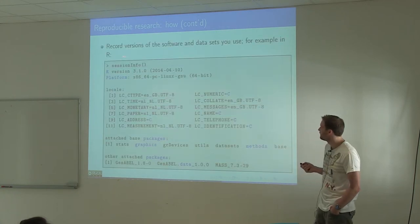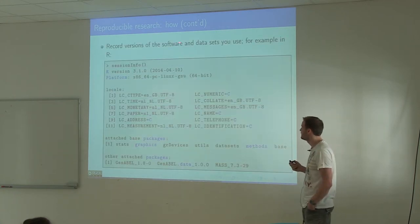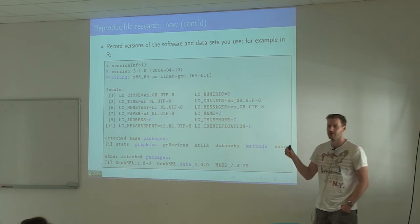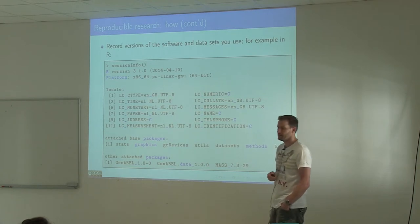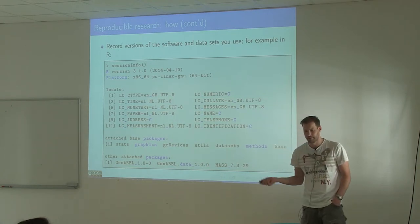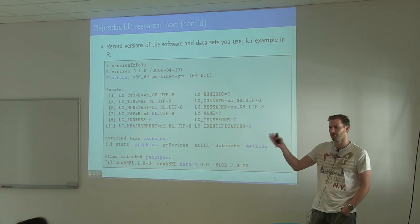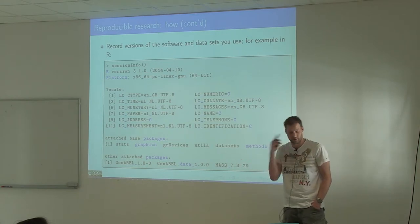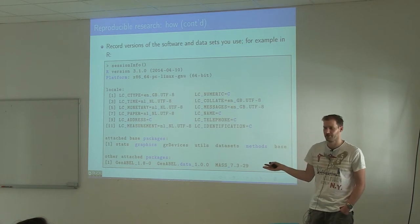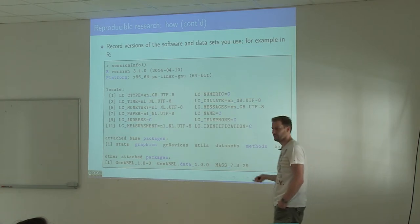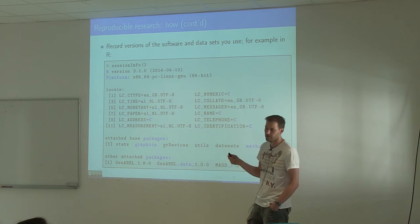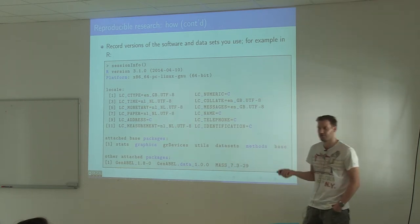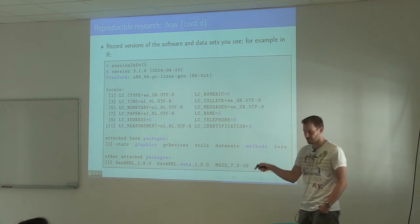One very important thing that I've seen being neglected is always write down the versions of the software that you use. I see a lot of papers from people that I work with and they say I imputed the genetic data with this or that tool, but if they don't specify the version then you cannot actually reproduce it. A new version may be better, it may not be, you may have new bugs introduced, or if it is actually better you still want to know that they used the new version.